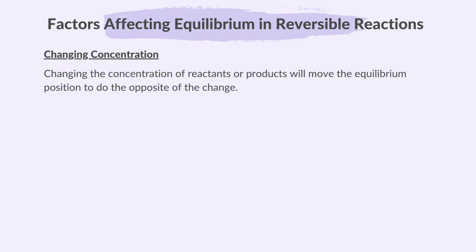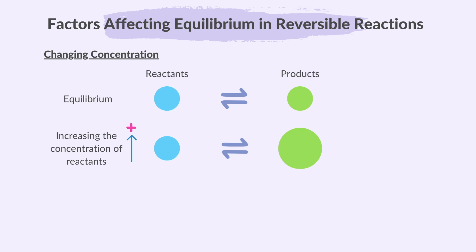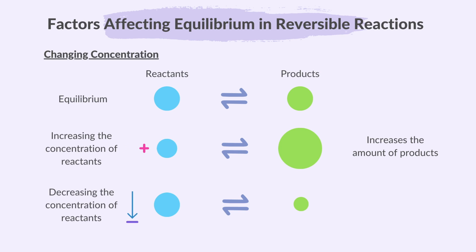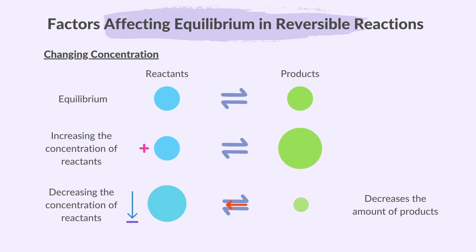Changing concentration of reactants will move the equilibrium position to do the opposite of the change. When we increase the concentration of reactants, the equilibrium shifts toward the products to balance it, resulting in an increase in products formed. If we reduce the concentration of reactants, the equilibrium shifts toward the reactants, resulting in a decrease in products formed. If there is too much of a product, the reaction decreases its amount to balance; conversely, if there is not enough product, the reaction produces more.